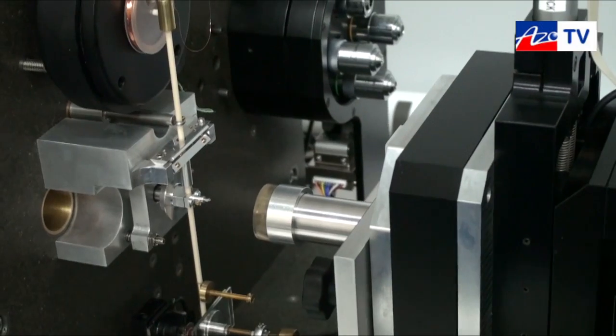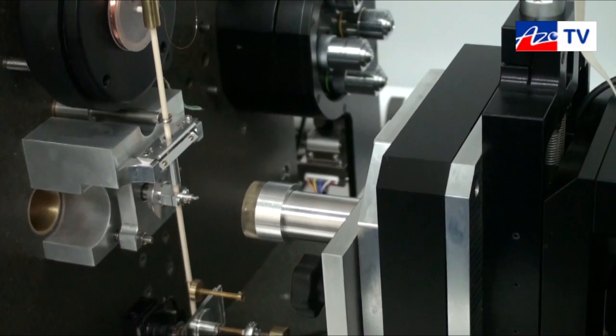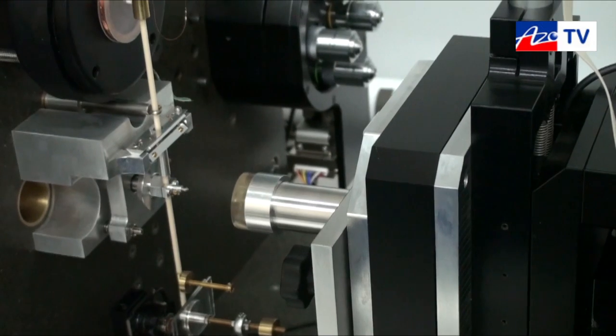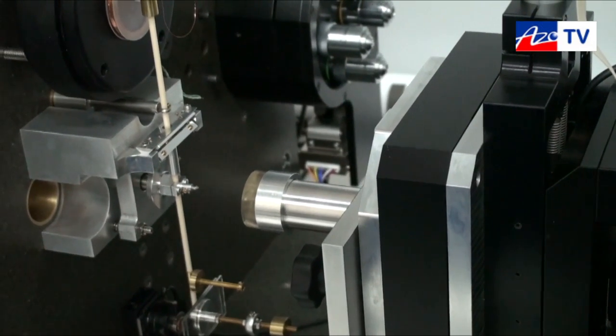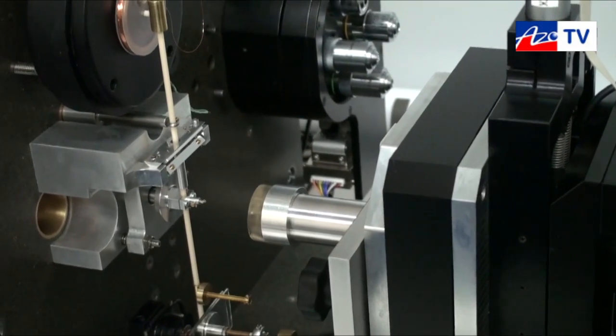That's actually now driving in towards the indenter. Set up in the calibrations, we've got a safe stopping distance if you like. It will move in quite quickly up to a certain distance. It's set at 30 microns back from where the indenter is and then it will cover that last 30 microns slightly slower.